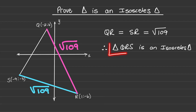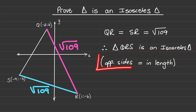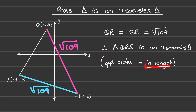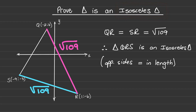Therefore, triangle QRS is an isosceles triangle. We have proven that opposite sides in the triangle are equal in length — two sides of the triangle are equal — and that is how you prove that a triangle is an isosceles triangle using analytical geometry.